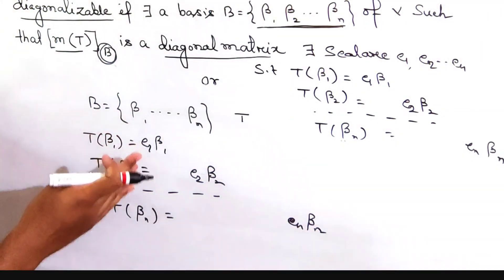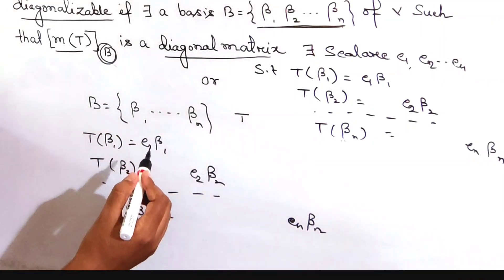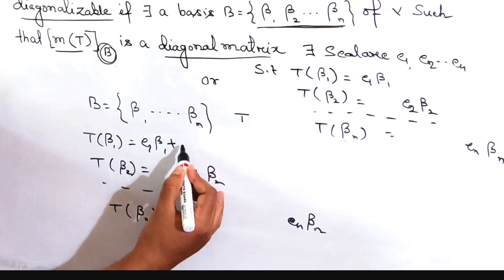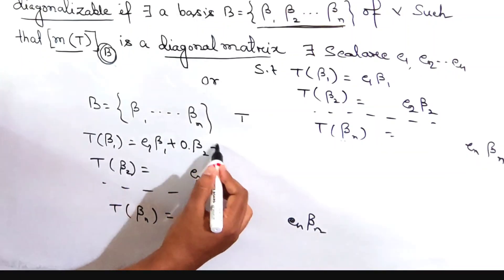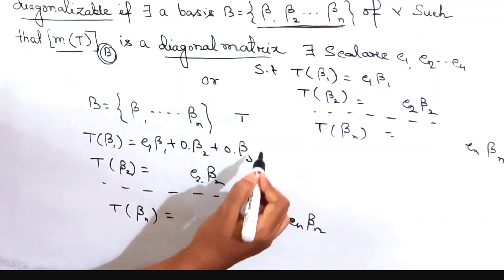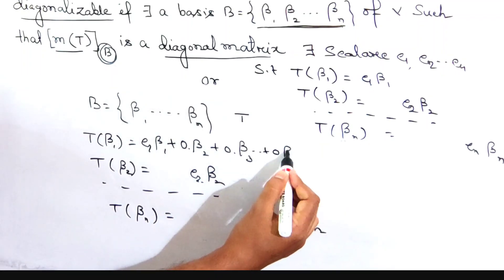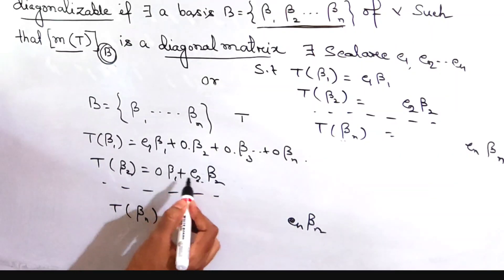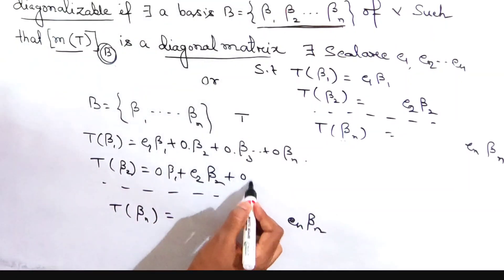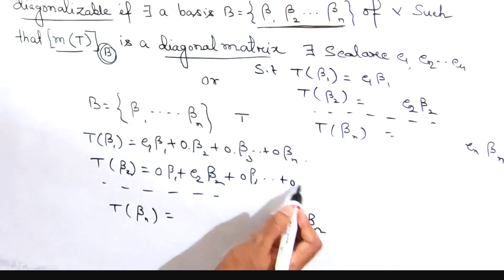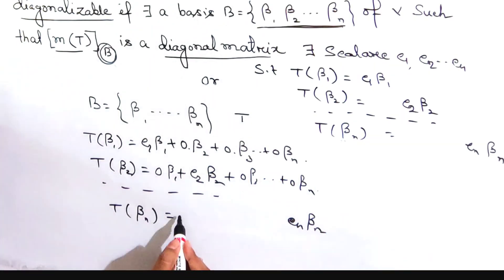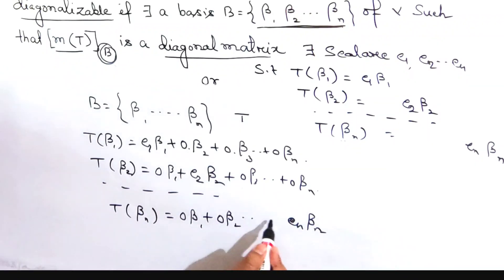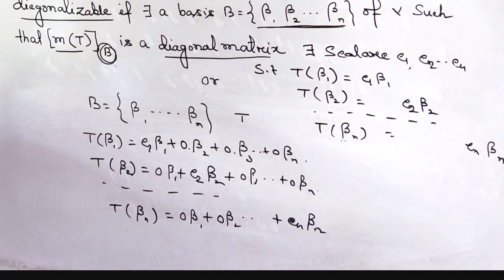These relations can also be written with zero coefficients for the other basis vectors: T(β1) = C1·β1 + 0·β2 + ... + 0·βn, and similarly for T(βn) = 0·β1 + 0·β2 + ... + Cn·βn.